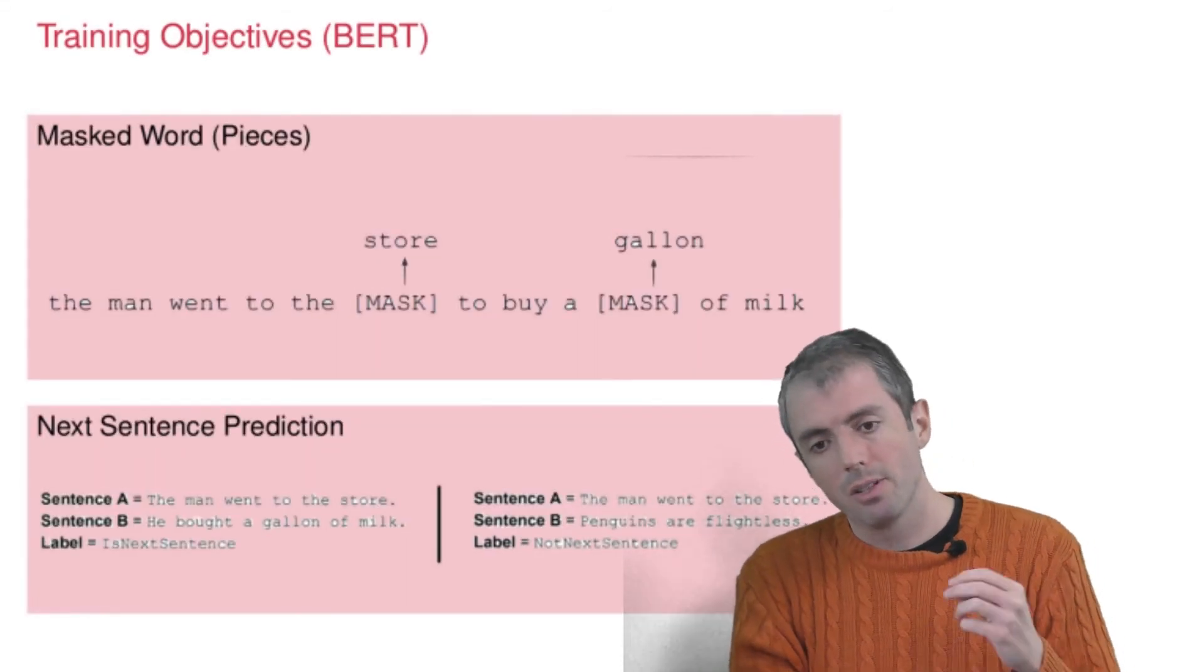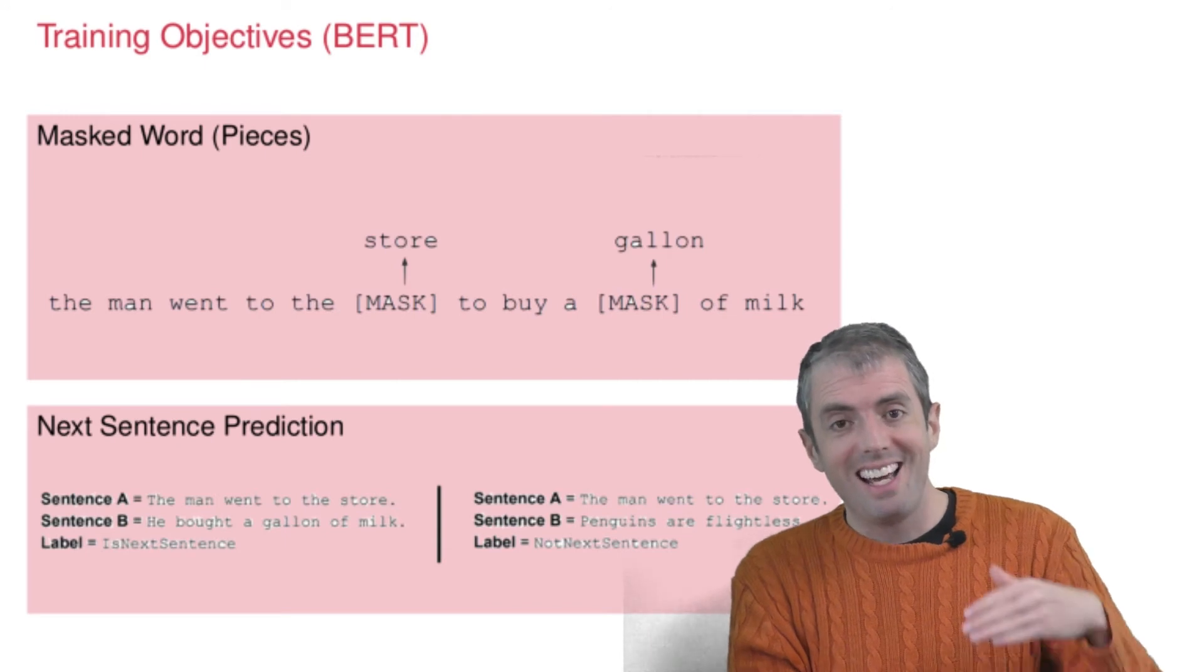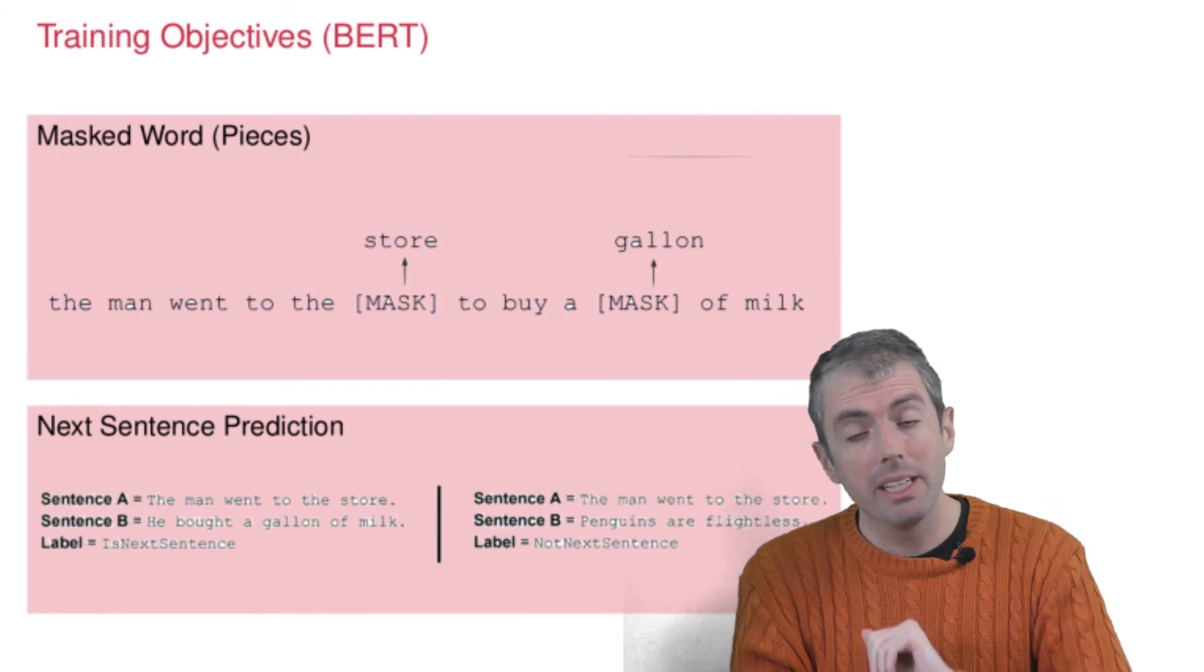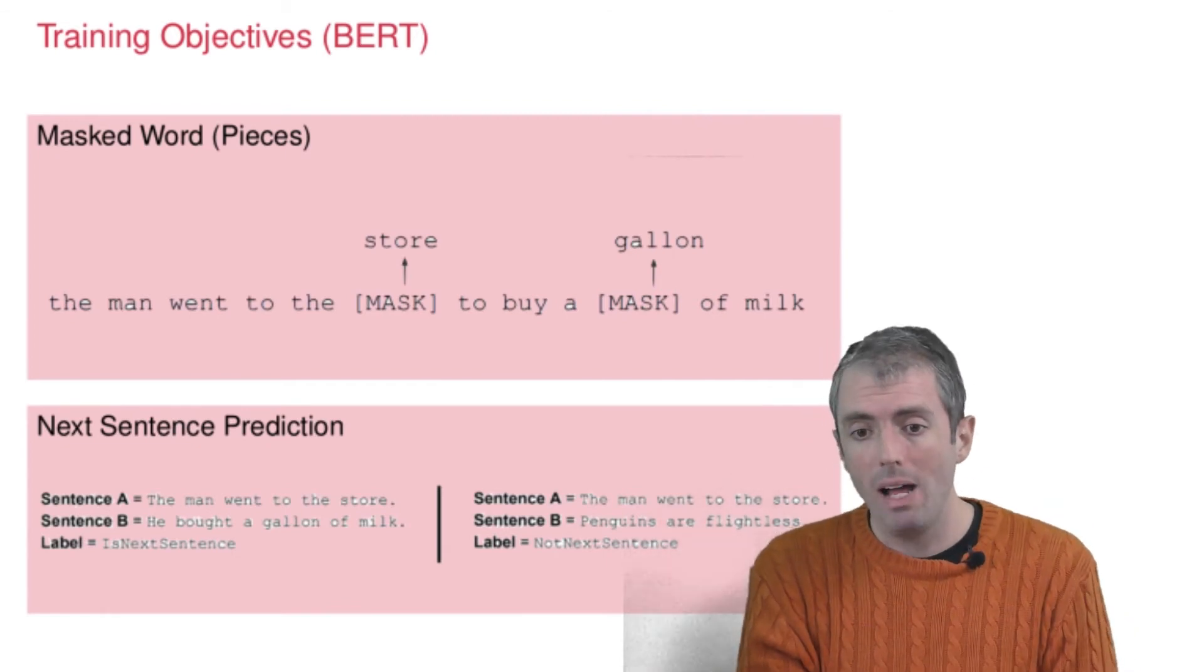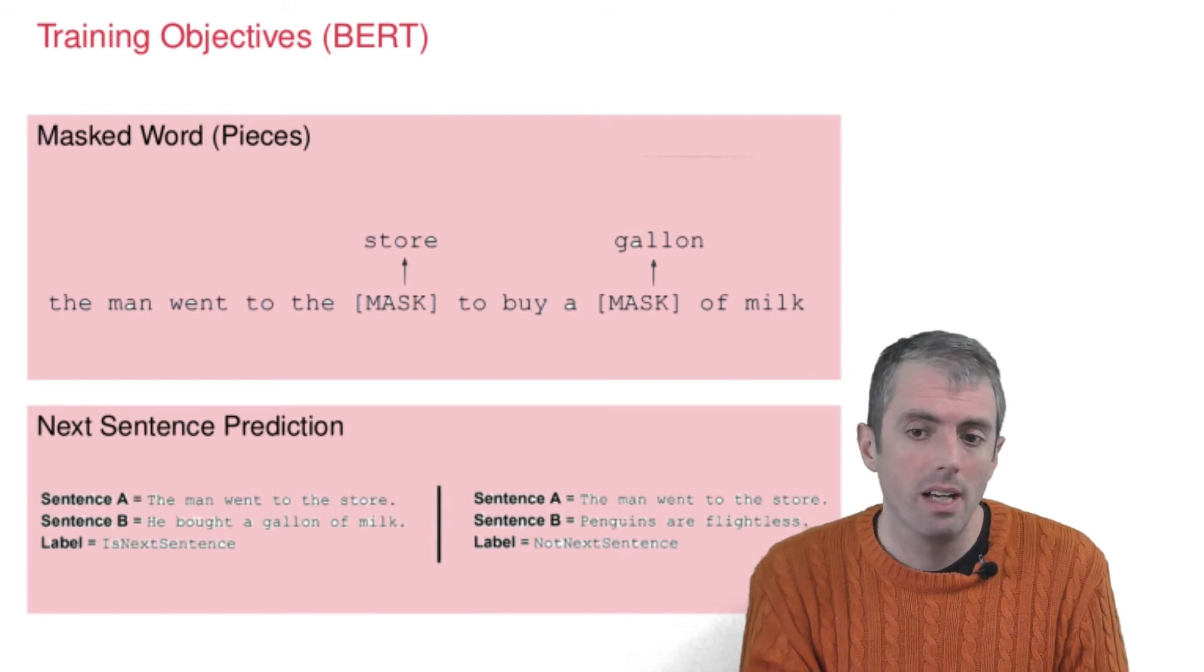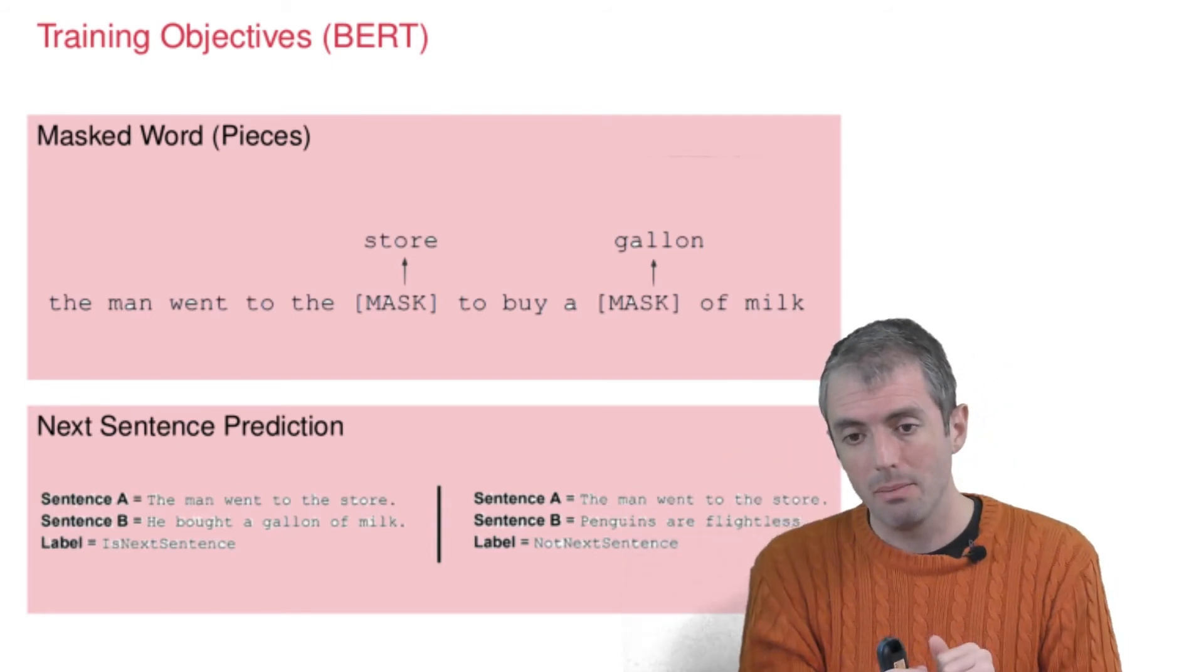Another big innovation of neural language models is the training objective. Traditional language models, you have a context and you try to predict the next word. BERT did something a little bit different that seems to work well. Instead of trying to predict the next word, you try to predict masked words from a sentence.